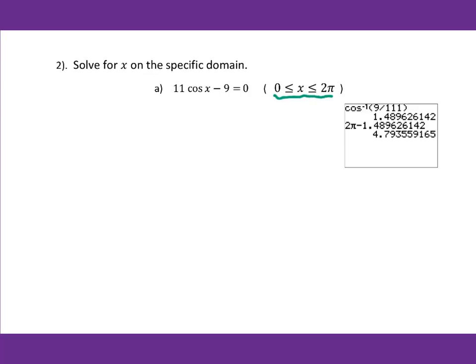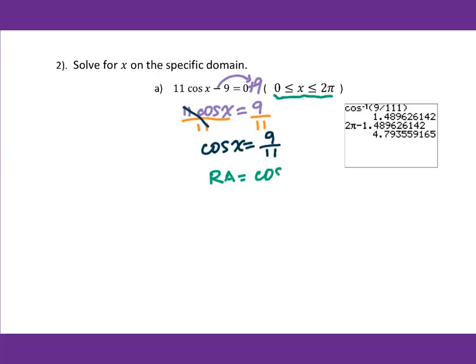First of all, we know this is a linear pattern, so we need to isolate the cos(x) on one side. Therefore, I add 9 on the right side, then I got 11cos(x) equal to 9. Then I divide it by 11, so I got cos(x) equal to 9 over 11. Then I go to find the reference angle, which equals inverse cosine of 9 over 11. We put this into the calculator and got 1.490.